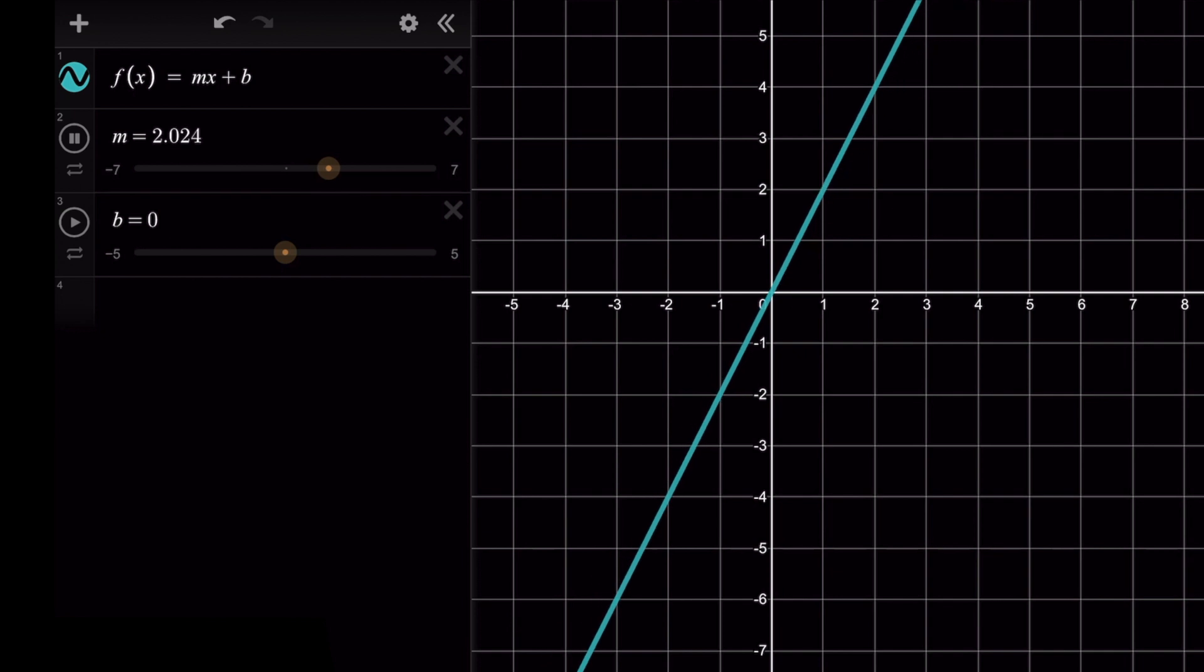But when we make m larger, so we let m become a larger value, this line is getting steeper. So the slope is getting steeper, the rate of change is increasing, so we just have a larger slope.